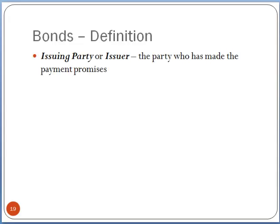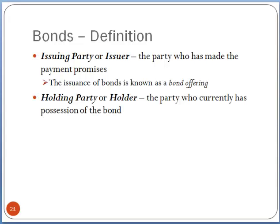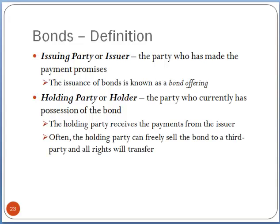Let's talk a little bit about who issues bonds, or the issuing party. This is the party that has made promises to pay based on the bond's specifics. The issuance of a bond is known as a bond offering. The holding party, or the bond holder, is the party who currently has possession of the bond. The holding party receives payments from the issuer — whether coupon payments or the final principal payment. Typically, the holding party can freely sell the bond to a third party and all the rights will transfer. There are very active bond markets, for example.